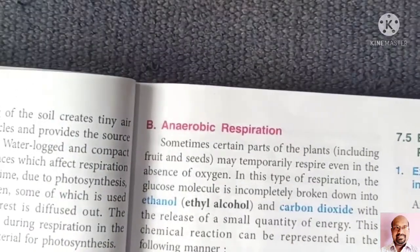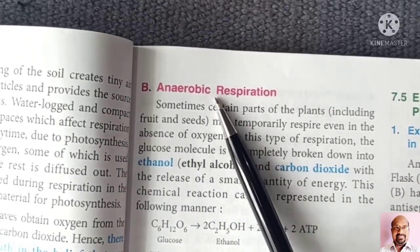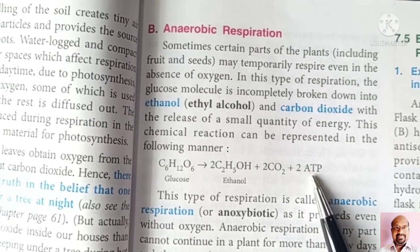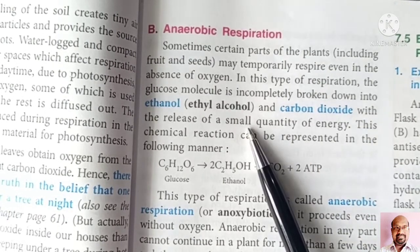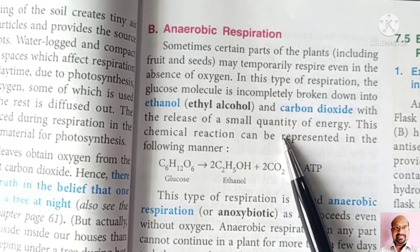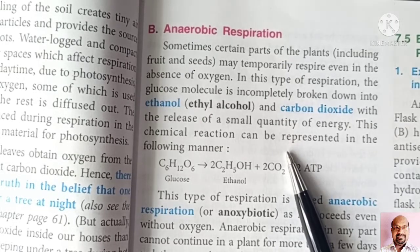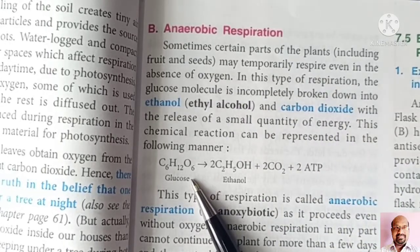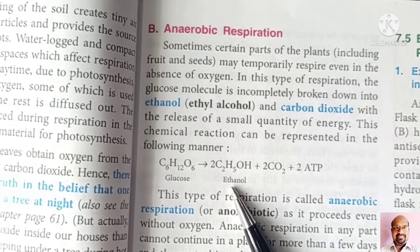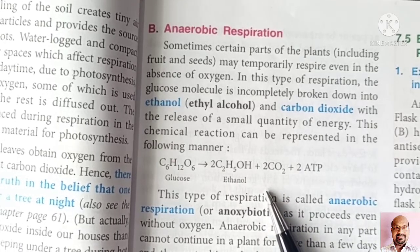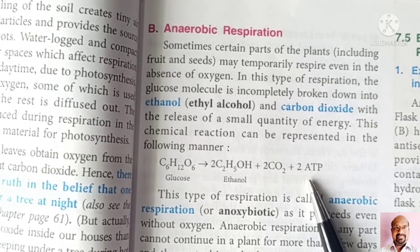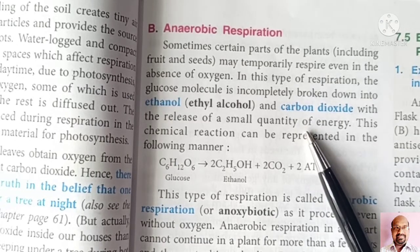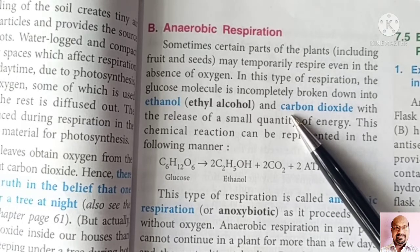In anaerobic respiration, the energy produced is very less — only 2 ATP. In this type, oxygen is not required; the respiration in which oxygen is not involved is known as anaerobic respiration. Here, glucose is oxidized or broken down into ethanol — also called ethyl alcohol — and carbon dioxide, liberating energy in the form of ATP. This anaerobic respiration takes place in small bacteria and fungi.